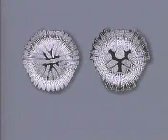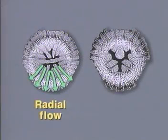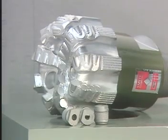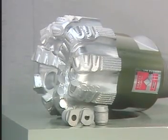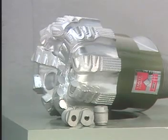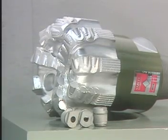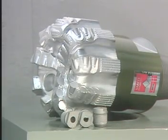Natural diamond bits that use large stones tend to use radial flow hydraulics, while smaller stone natural diamond bits used in drilling harder formations require the feeder collector fluid course arrangement. Most PDC bits use jet nozzles, which can be placed and oriented to efficiently direct drilling fluid and remove large volumes of cuttings.